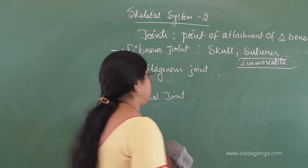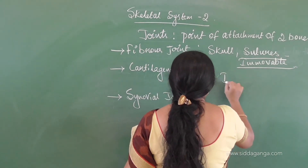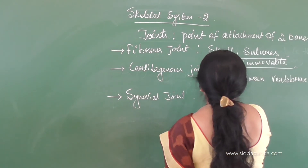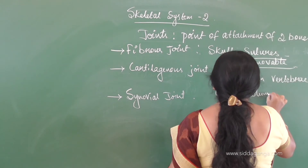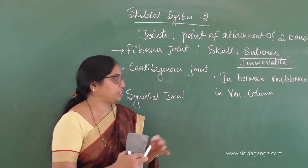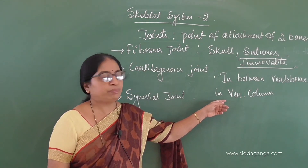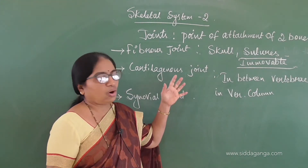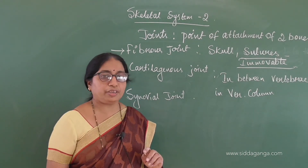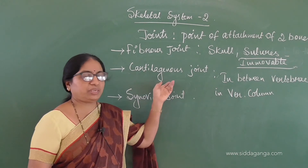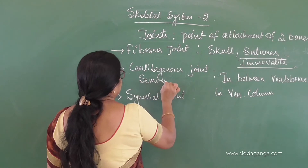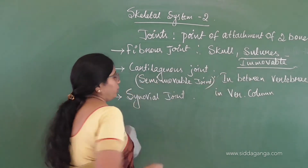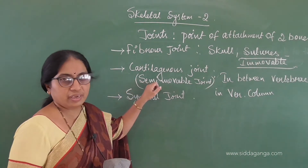The second type is cartilaginous joints, present between the vertebrae in the vertebral column. The vertebral column is made up of 26 serially placed bones called vertebrae, and each vertebra is joined to the next with the help of cartilaginous joints. They are not able to move completely but bring about flexibility, so they are called semi-movable joints — you can bend your back but cannot make a complete movement.